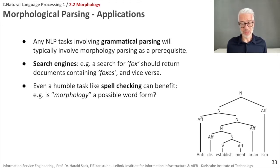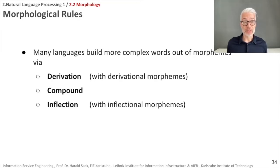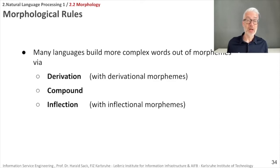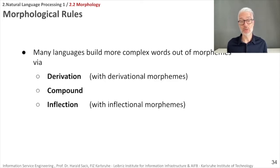Let's look at how words are constructed out of a stem and affixes. There exist so-called morphological rules. In many languages, complex words are built out of morphemes via three different types of rules: derivation (using derivational morphemes), compounding, and inflection (using inflectional morphemes).